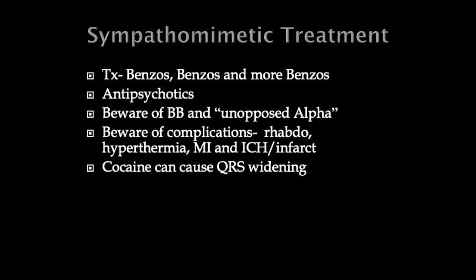Complications of sympathomimetic toxidrome: rhabdomyolysis, hyperthermia — which can be fatal — MI and intracranial hemorrhage or infarct. Classic teaching emphasizes intracranial hemorrhage, but they're actually more likely to get an infarct. The MI can be due to chronic coronary artery disease from persistent strain of chronic cocaine use, or due to vasospasm from acute overdose, or a mixture of both. Cocaine can cause QRS widening like TCAs — we'll talk more about that shortly.